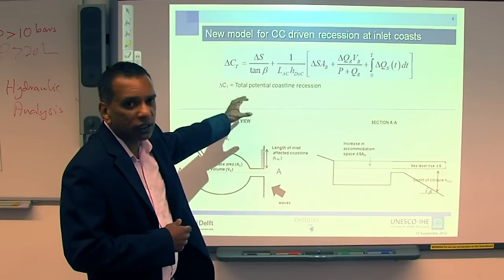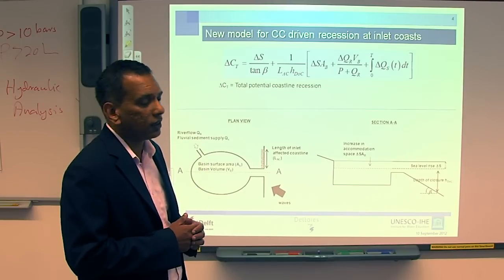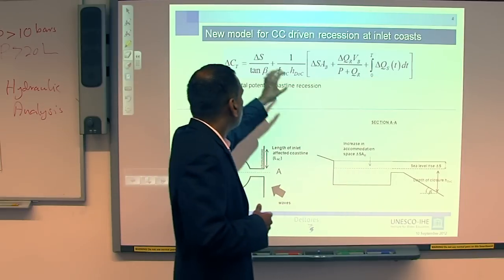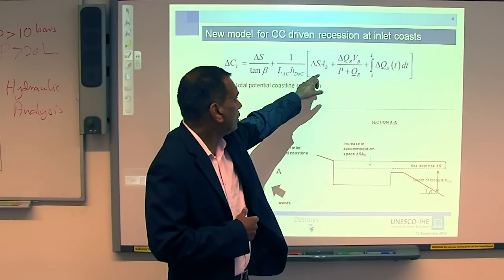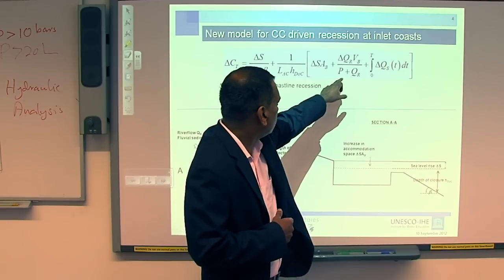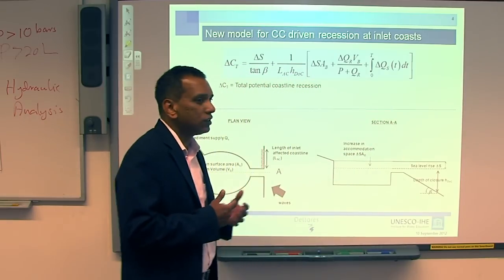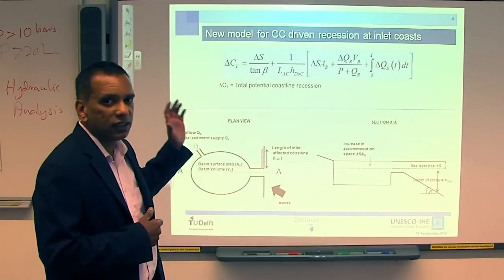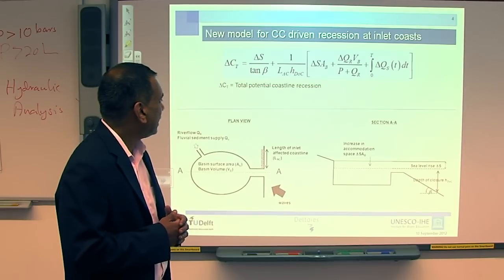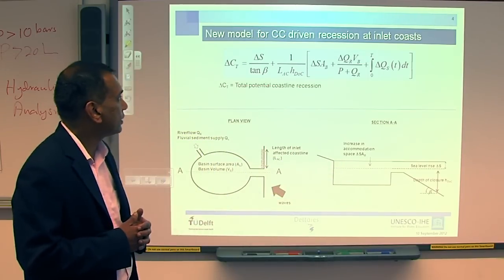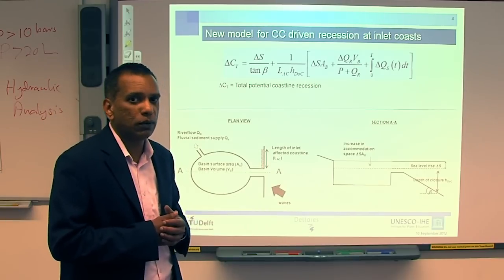Delta CT is the total potential coastline recession. Each of the processes I explained is represented by a term in the equation. The first term is the Bruun effect. The second term is the effect of basin infilling due to sea level rise. The third term is the basin volume change due to river flow. The last term represents changes in fluid and sediment transport into the system. It's a very simple equation — it doesn't need any iterations or numerical programming, and all the parameters are indicated in the figures.